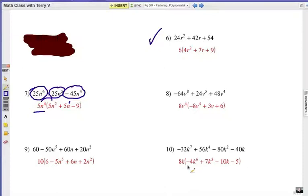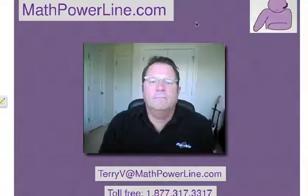And finally, number ten, I'm going to take a k factor out along with an eight. So it's an eight k for the greatest common factor. Watch your signs. And again, you check by using distributive property.